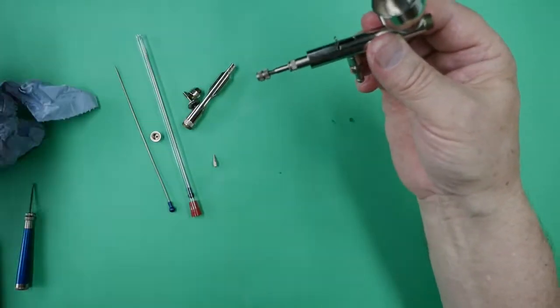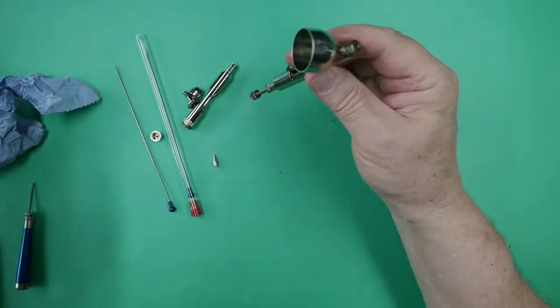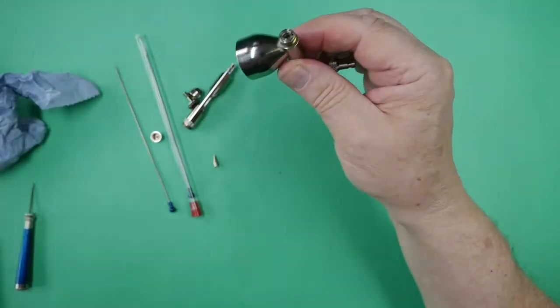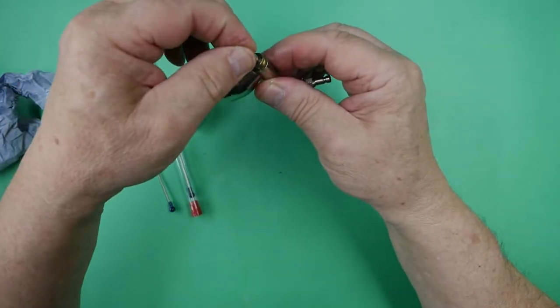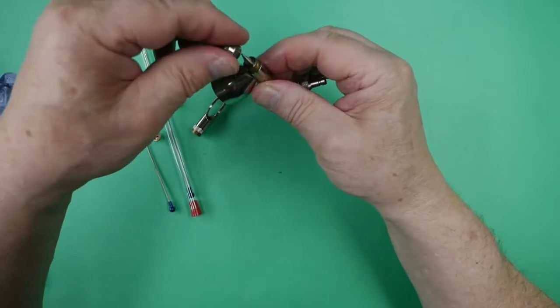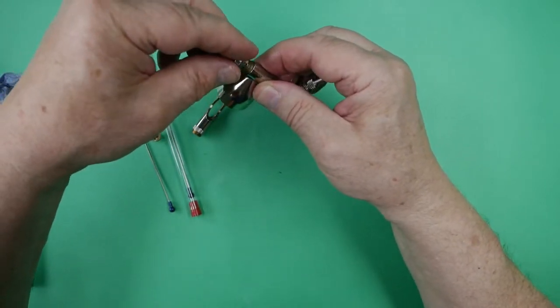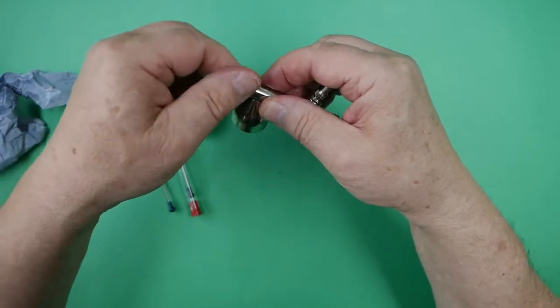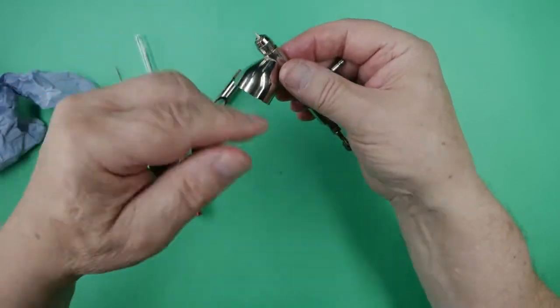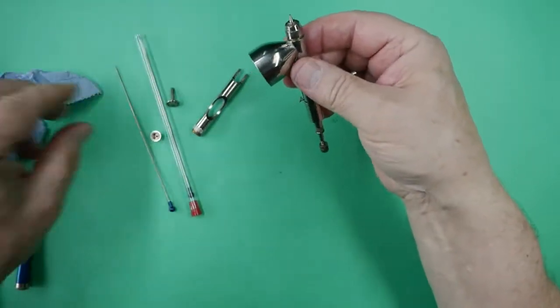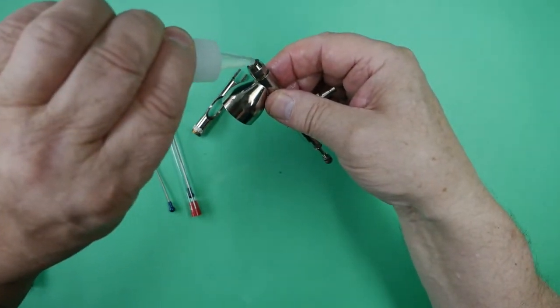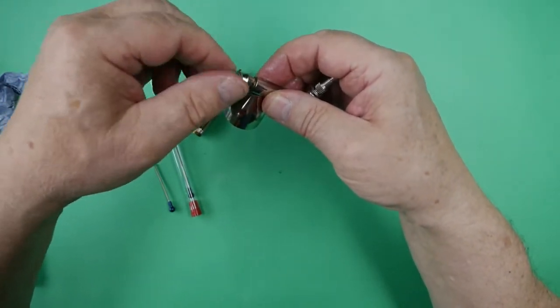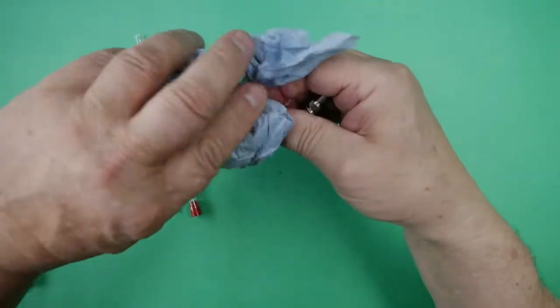As I say, I do tend to go over the top, but it doesn't do the airbrush any harm. In fact, it does it more good than it does harm. And especially on these parts, as we all get paint down the front here, and if the threads are covered in lubricant, the paint isn't going to dry on there and stop the parts coming undone, because the lubricant will stop it from getting into the threads and locking it up.